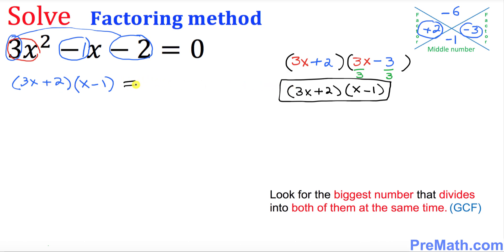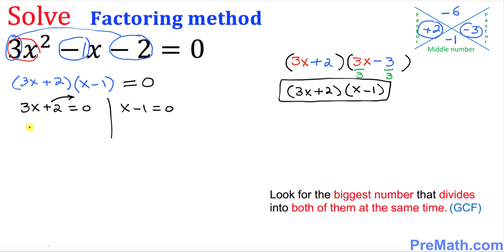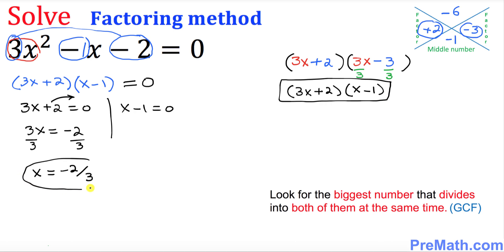These are our factors. Set each factor equal to 0 and solve for x. We have 3x + 2 = 0 and x - 1 = 0. Moving the positive 2 gives negative 2, then dividing both sides by 3 gives x = -2/3 as one solution. On the other side, x = 1 is the other solution. So negative 2/3 and 1 are our solutions.